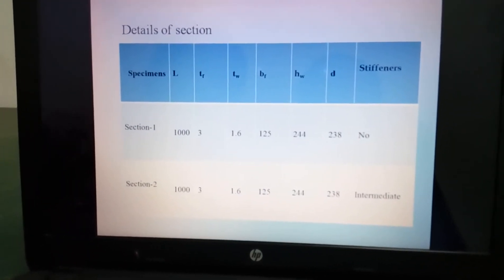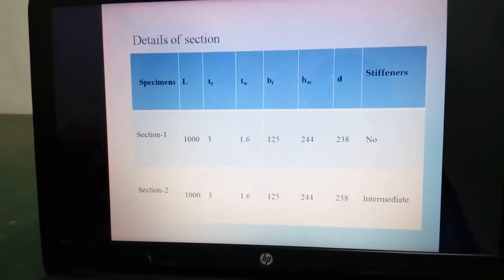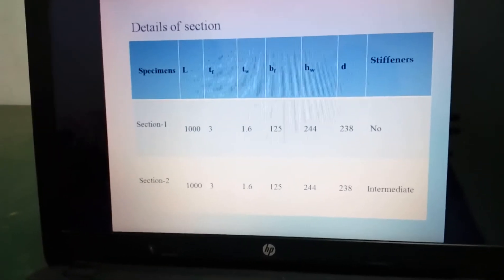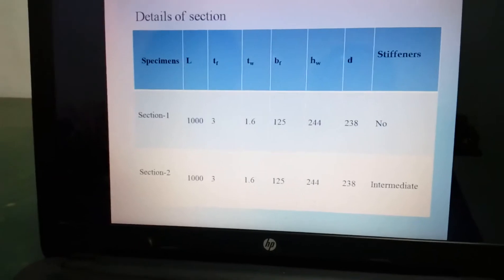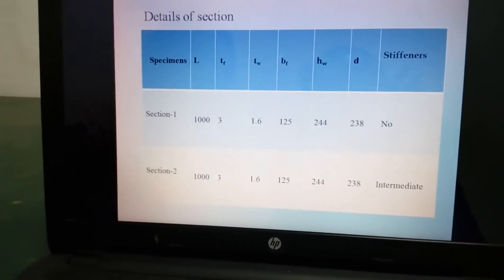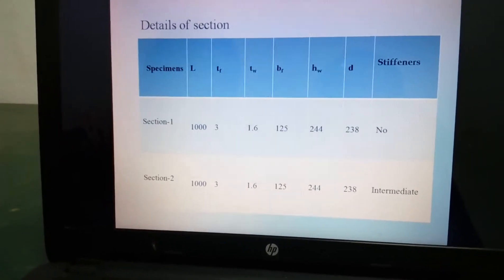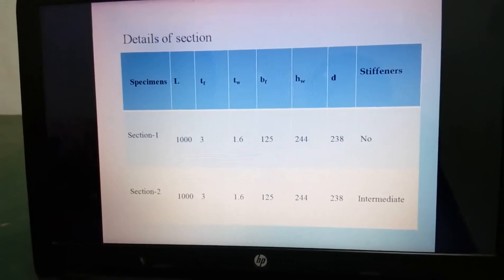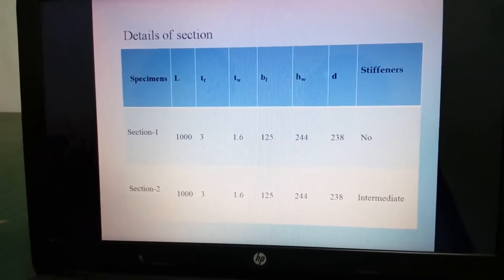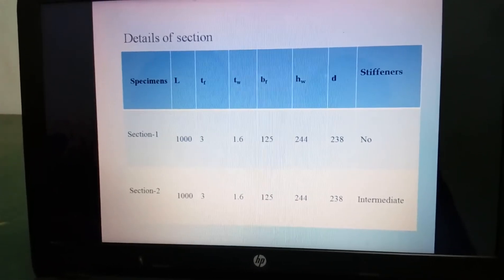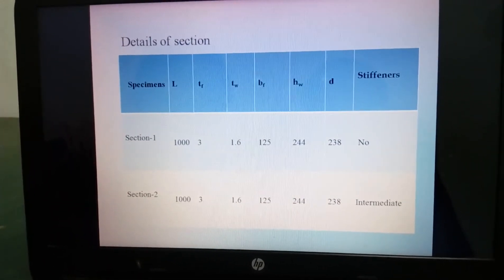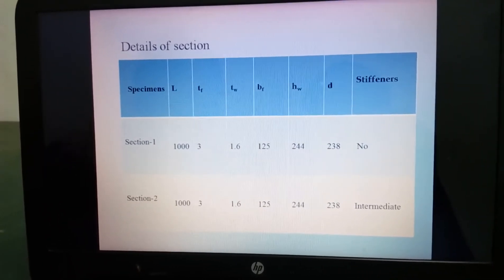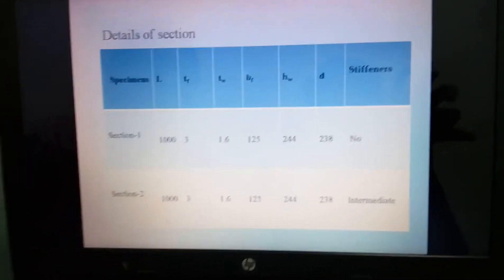In this project I took two types of sections, named as section 1 and section 2. Length and stiffness, thickness of flanges and thickness of web, breadth of the flange, height of the web and depth of the section. Breadth of the flange is 125 mm, height of the web is 244 and depth is 238.